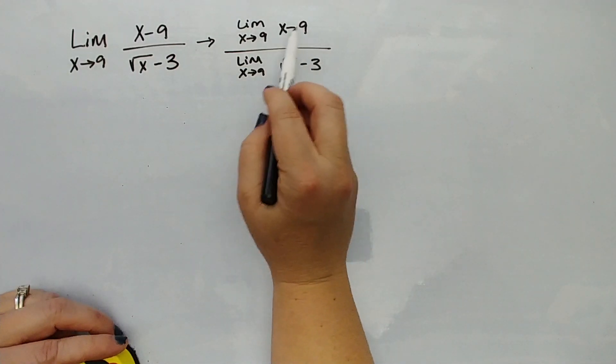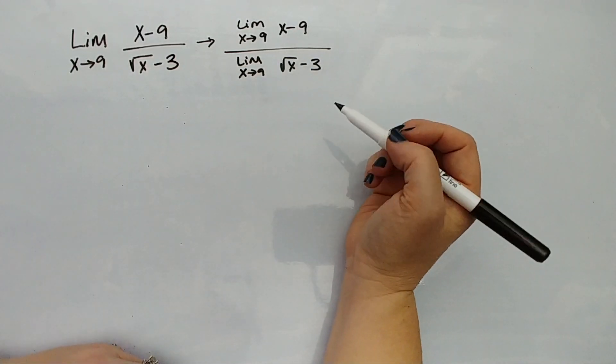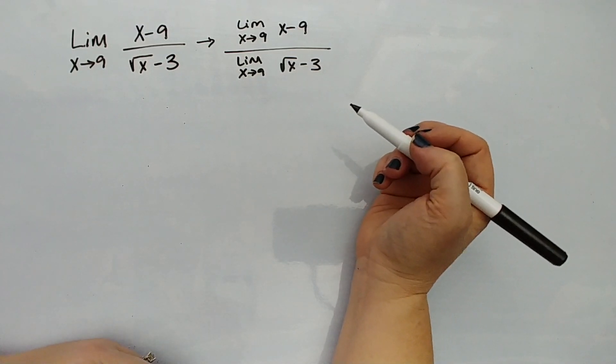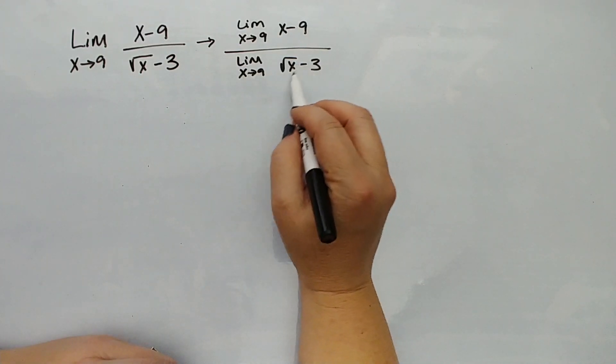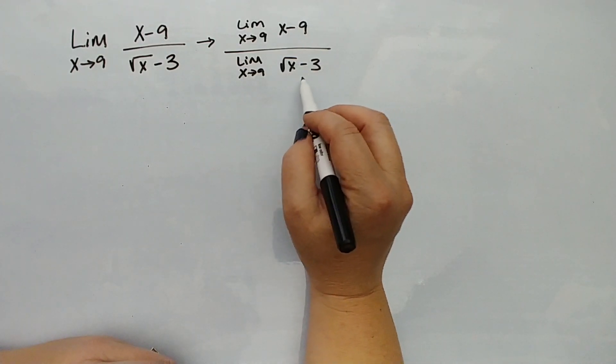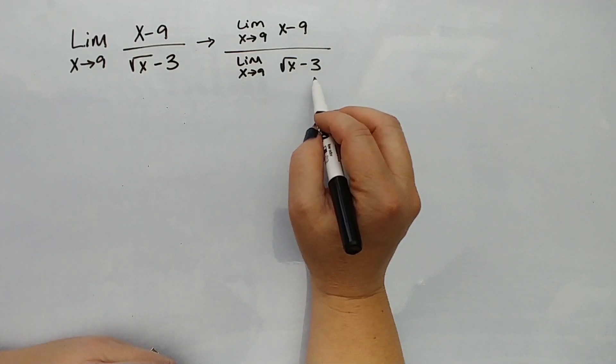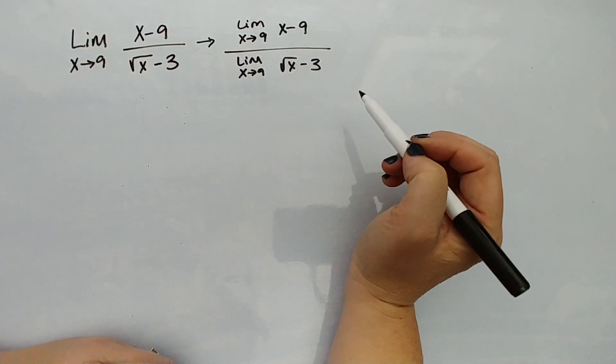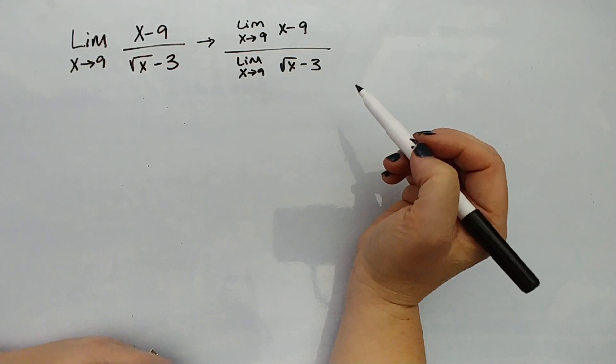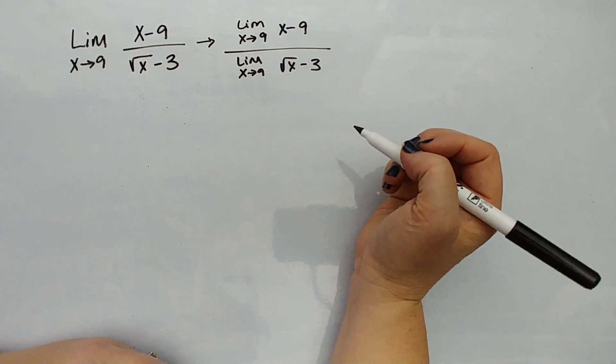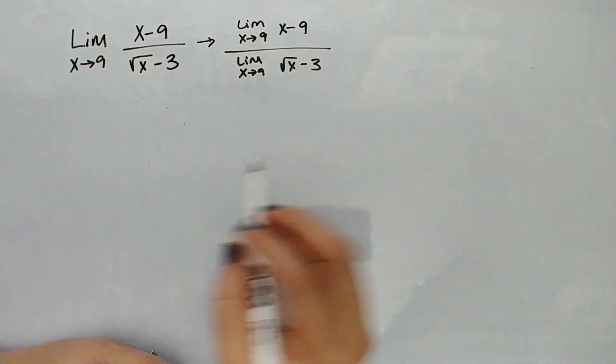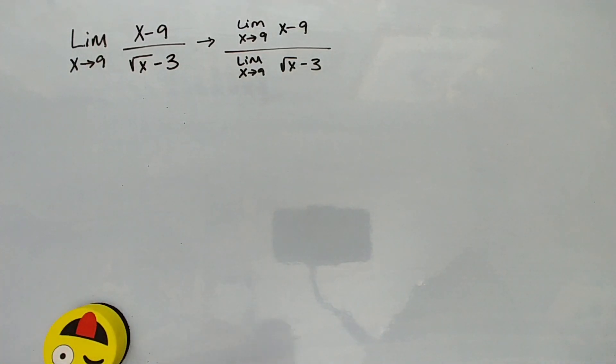In the numerator, we have x minus 9, a linear function that's continuous everywhere. In the denominator, square root of x minus 3 isn't continuous everywhere, but it is continuous where x equals 9. If you want to graph that, I suggest you pause the video and graph it on your calculator. At this point, we really can just plug in 9 and see what happens.